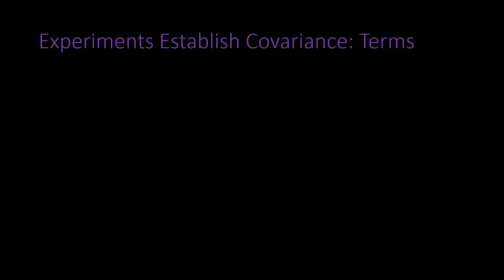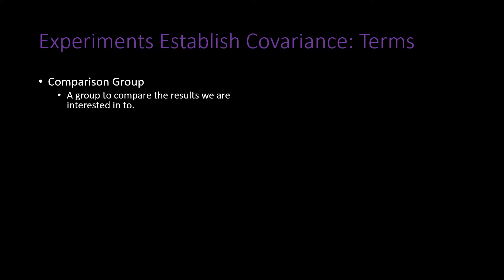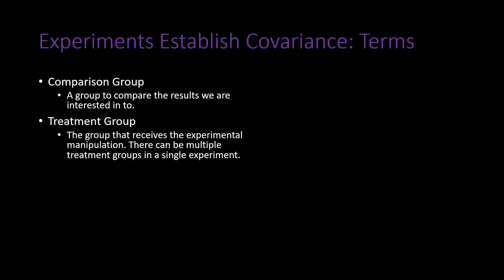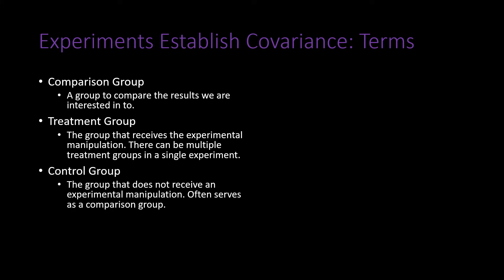Experiments are able to establish covariance. Comparison groups are groups used to compare results — all levels of an independent variable can serve as comparison groups to each other. A treatment group receives some type of experimental manipulation; there can be multiple treatment groups in a single experiment. This is contrasted with a control group, which does not receive any experimental manipulation and often serves as a baseline comparison, with performance matching everyday daily behavior.